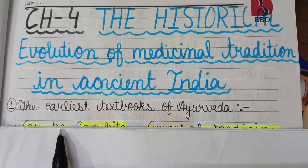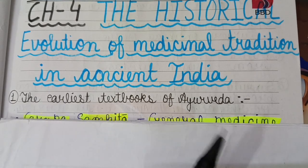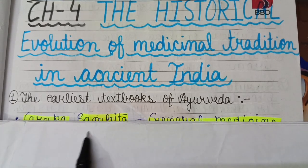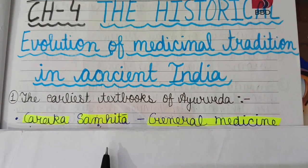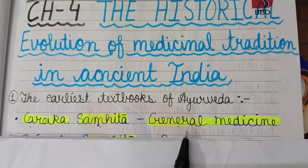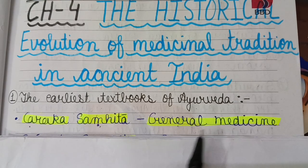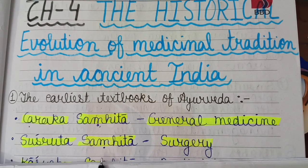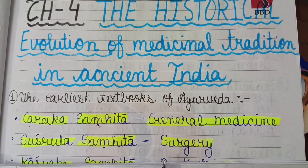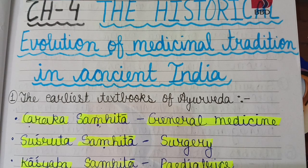First we discuss about the textbooks of Ayurveda — the earliest textbooks. First is the Charak Samhita, which is related to general medicine. Next is the Sushrut Samhita, which is related to surgery. And next is the Kasyap Samhita, which is related to pediatrics. These three books are very important in Ayurveda.